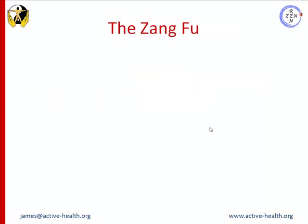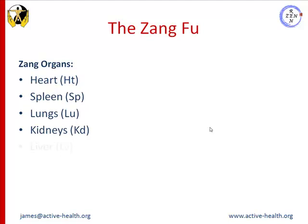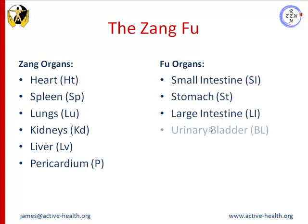We have two types of organs included in the Zang Fu. We have the Zang and, as we looked at in the five element lecture, we had the heart, spleen, lungs, kidney, liver and pericardium as Zang organs. Here we see them with their abbreviations and their partners. The Fu organs were the small intestine, the stomach, the large intestine, urinary bladder, gallbladder and of course the San Jiao.